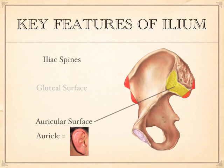If you look at yours, right here you'll see a nice little rounded ear, especially on your bone. What this is, is where the sacrum fits. This is actually part of the joint between the sacrum and the ilium.